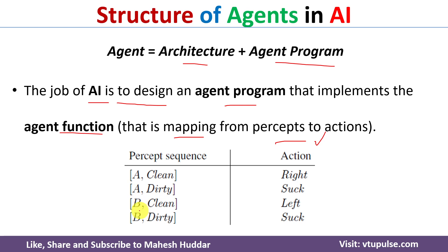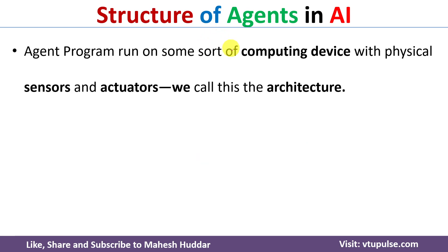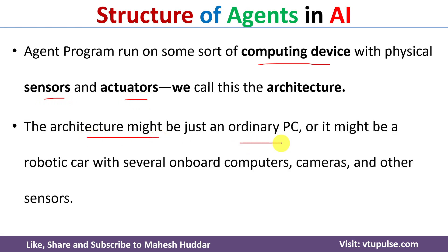Location B may be clean or B may be dirty. For each of these percepts an associated action is added — this is the agent function. The implementation of this agent function is nothing but the agent program. When you write an agent program, it should run on some sort of hardware, and that hardware is the architecture. That hardware or computing device includes sensors and actuators — the architecture might be an ordinary PC, or a robotic car with onboard computers, cameras, and sensors.